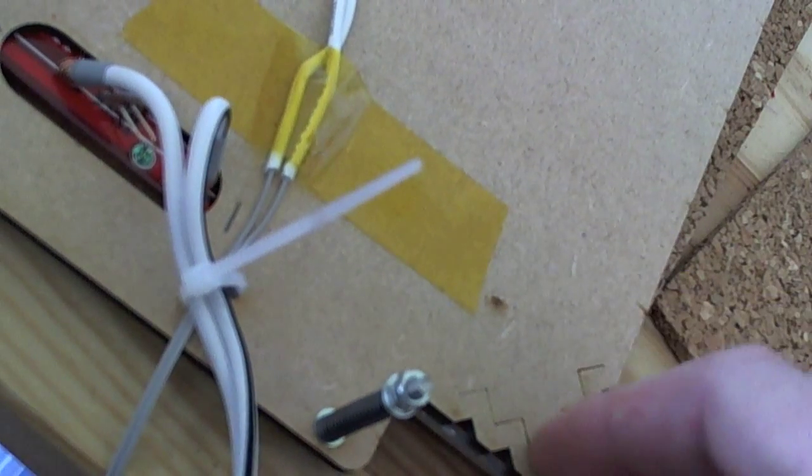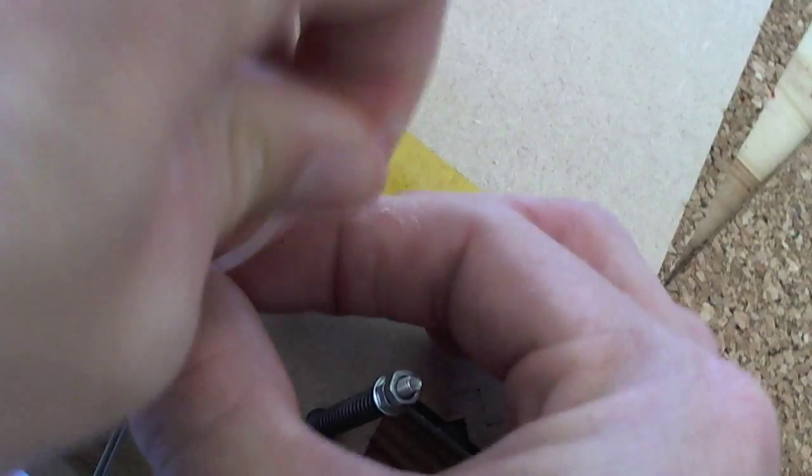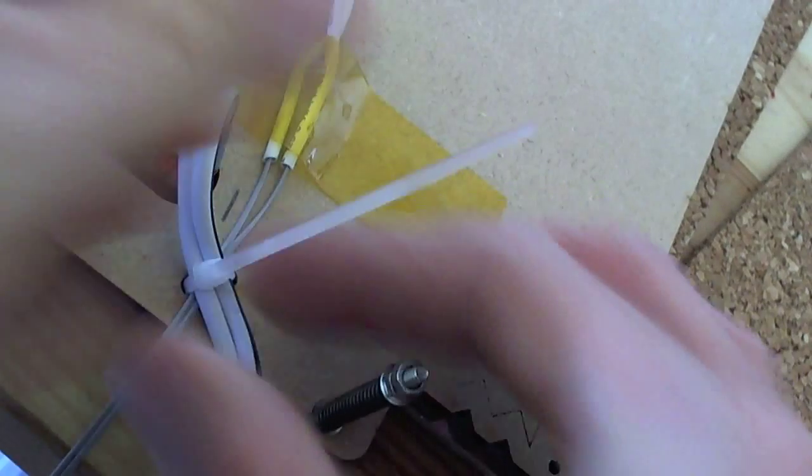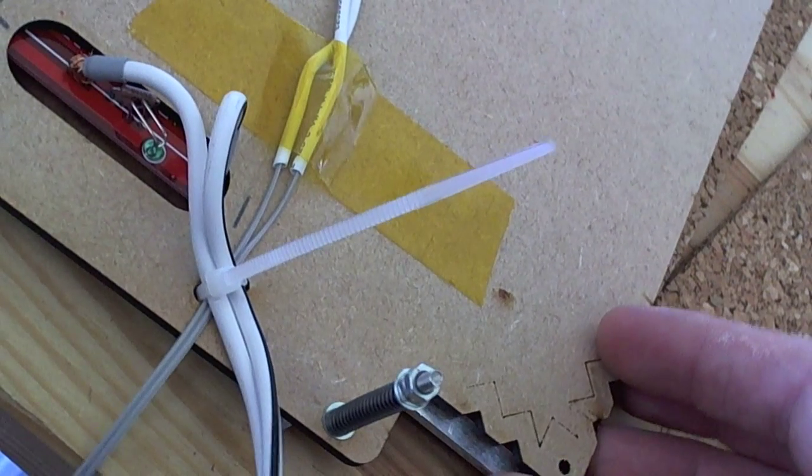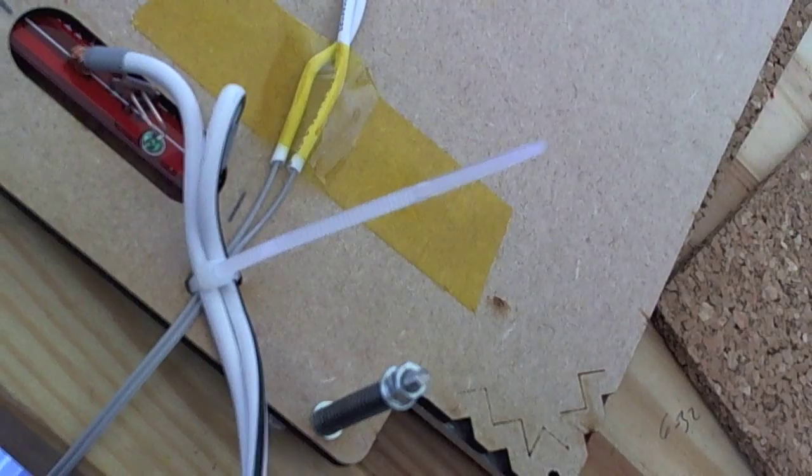Now the reason we want to zip tie this nice and snug is because as the bed moves around, you don't want the wires to have any play in them so that they don't get worn over time.